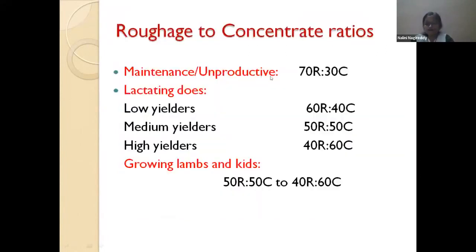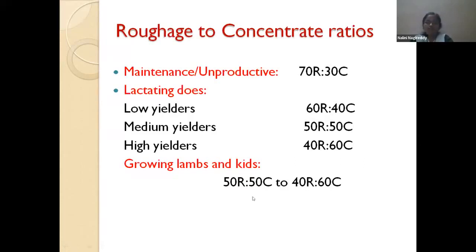For maintenance of ewes and rams not under breeding conditions, around 70% crop residues and 30% concentrates is optimal. In breeding conditions, crop residues can be slightly reduced to 60%. For lactating does with high milk yields of around 2 kg per day, a 50:50 or 40:60 roughage-to-concentrate ratio is appropriate. For growing lambs, a 50:50 ratio is optimal, and you can go to 60:40 (crop residue to concentrate) for economic advantage.